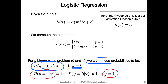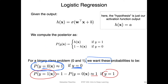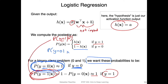How is this probability computed? The class membership probability for y equals one is computed simply as the activation — the logistic sigmoid applied to the net input. And for the second case, the class membership probability for y equals zero can be computed as one minus the activation.